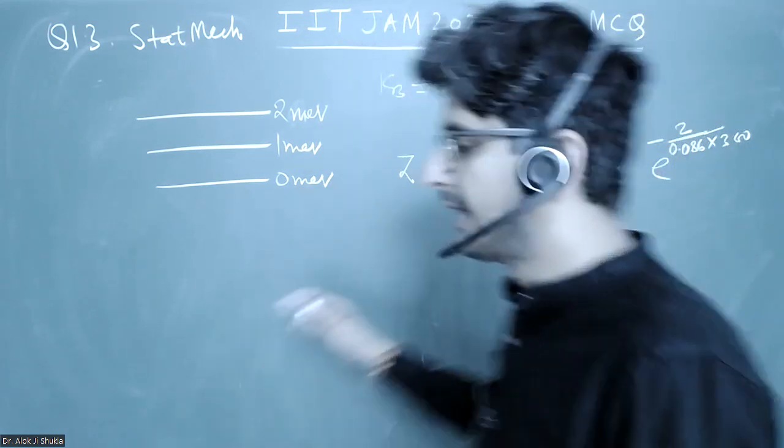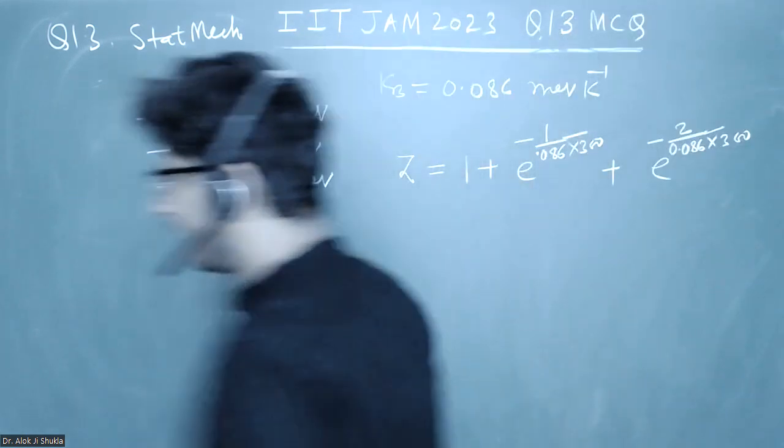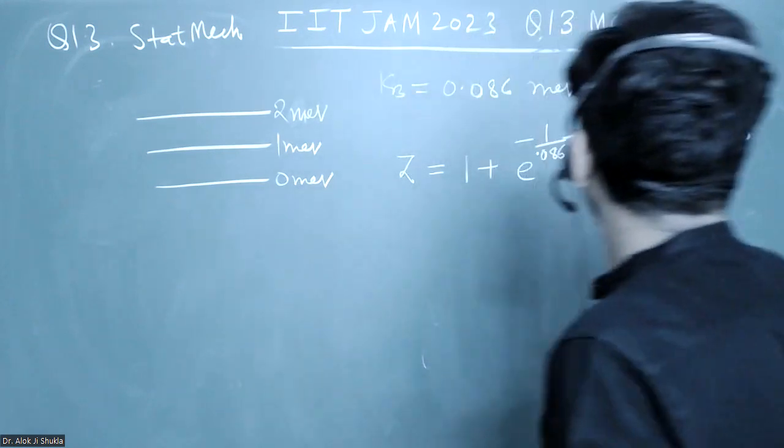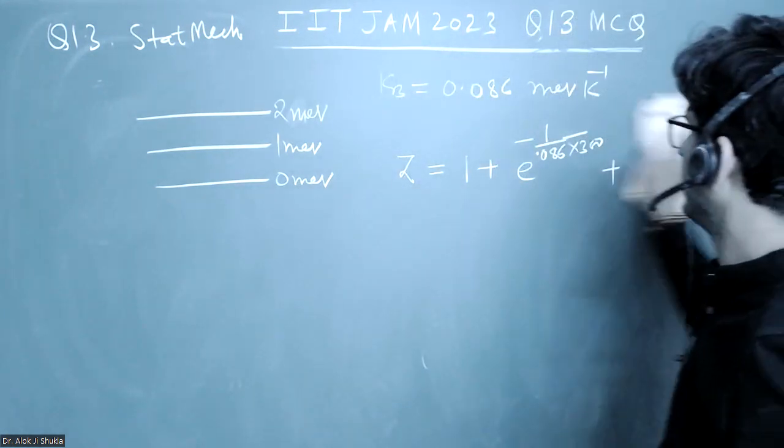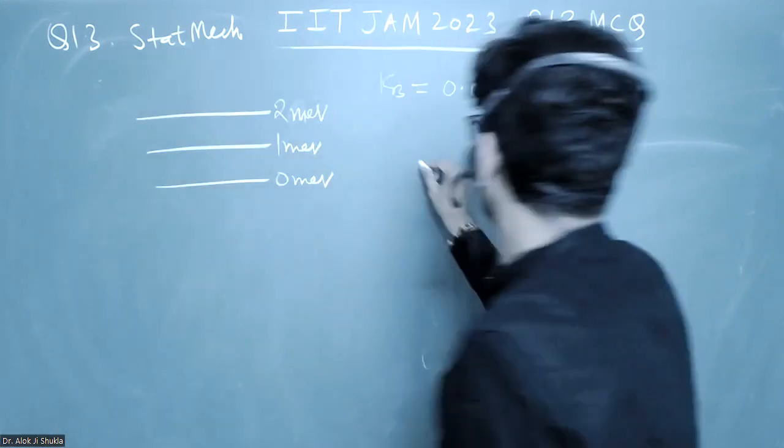So this is the partition function and what we can do is we can just write this in terms of beta and then we can calculate the value. So finally we will put the value. So let me write it, z will be equal to